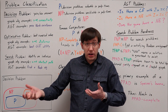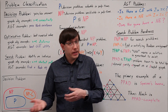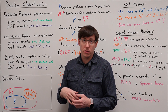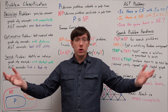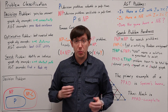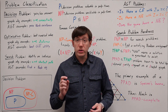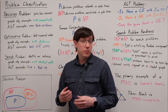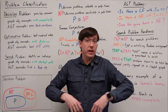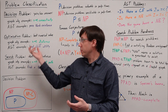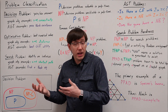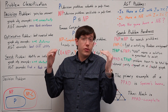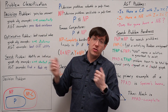Many problems we study in computer science naturally have variants that fall into all of these categories. For example, if I want to find the correlated equilibrium that's best for player one, actually getting the correlated equilibrium is a search problem, finding player one's utility under the best equilibrium is an optimization problem, and determining if there is some equilibrium that gets at least a threshold utility would be a decision problem.